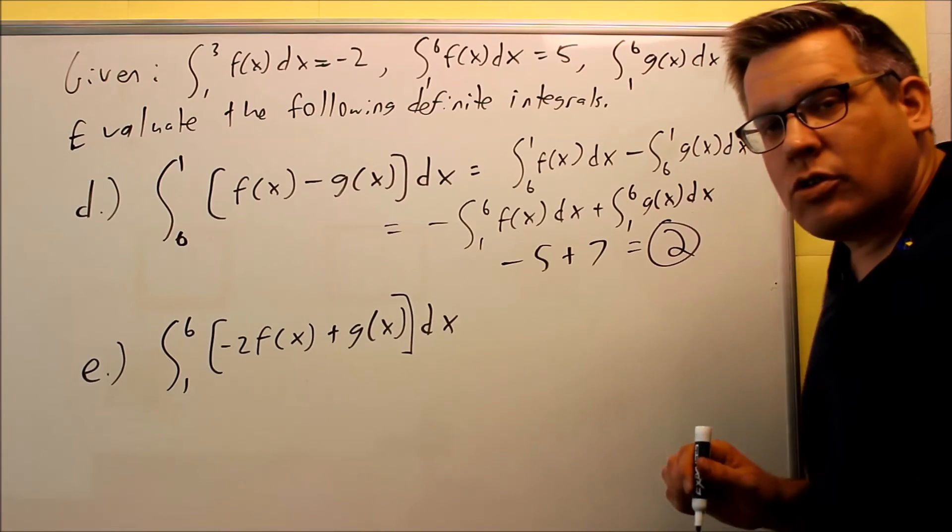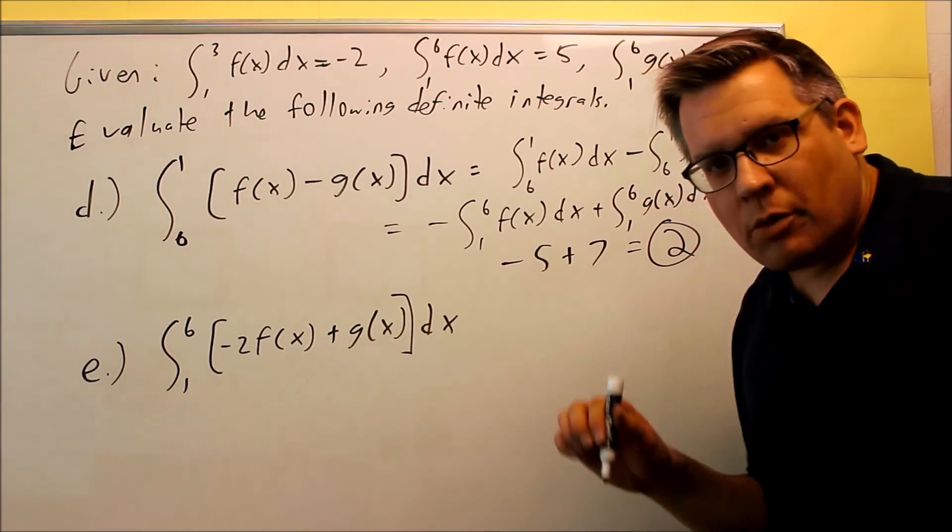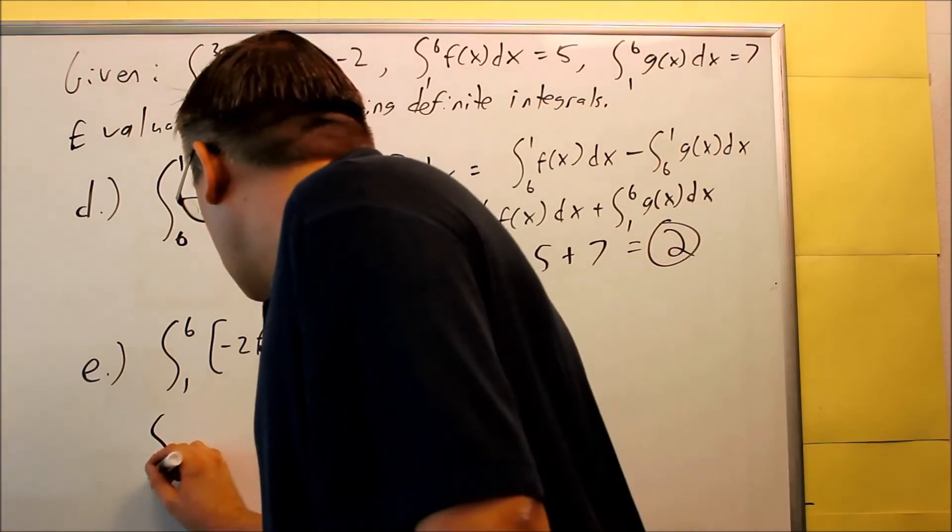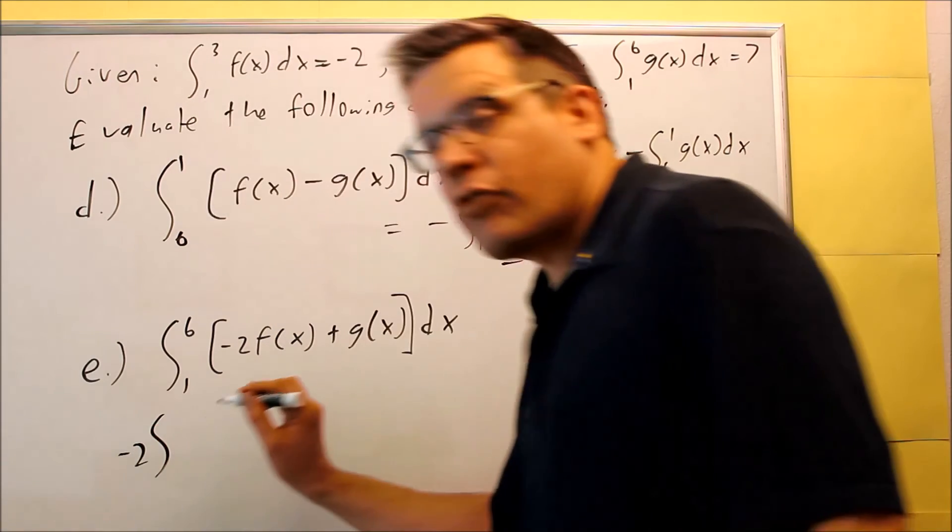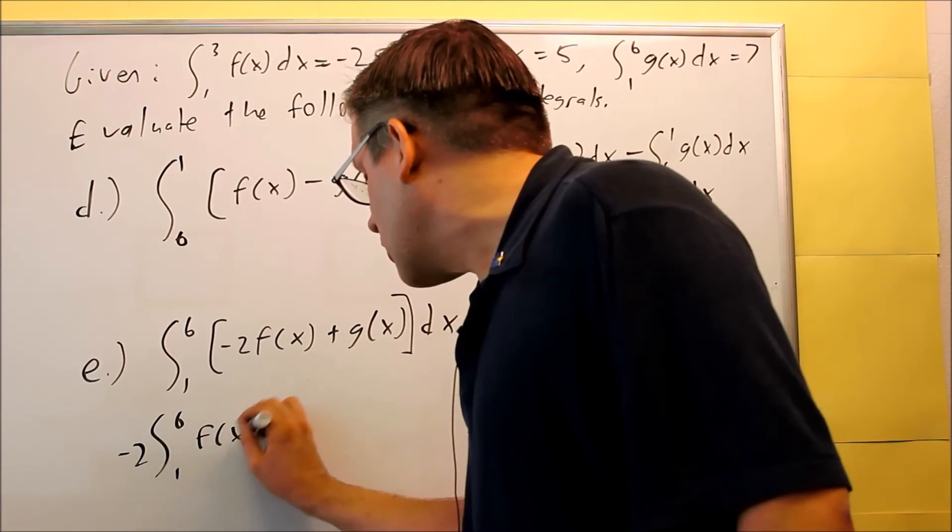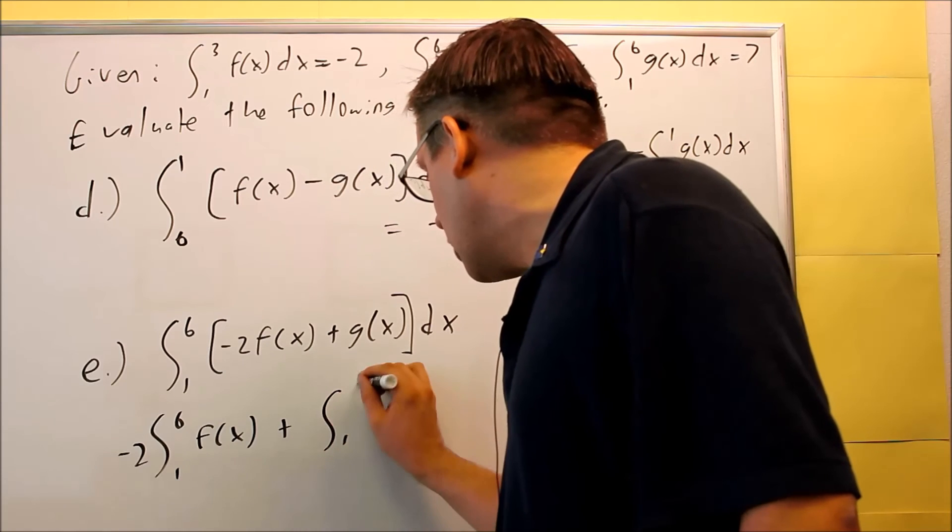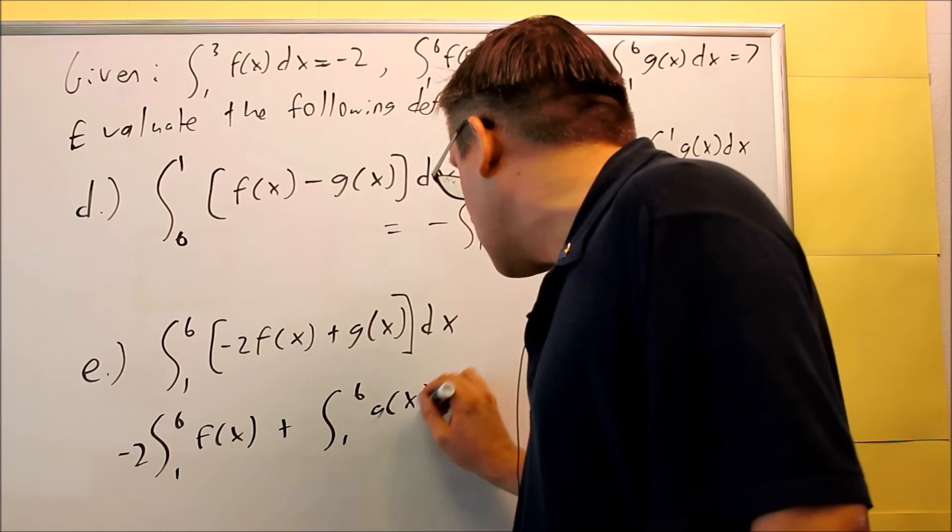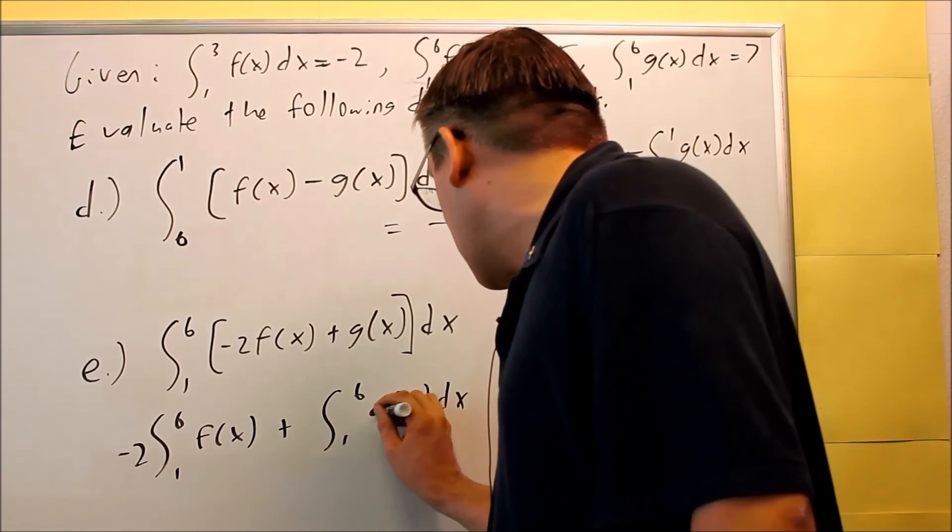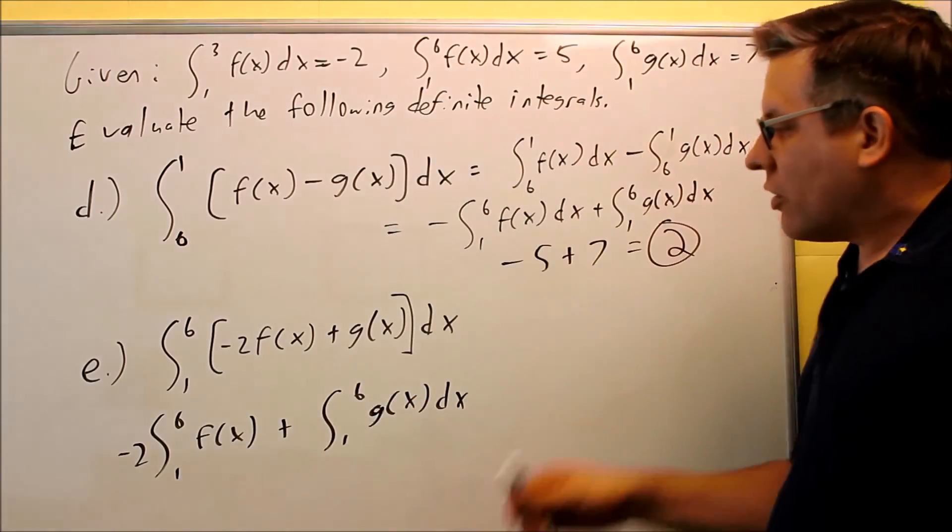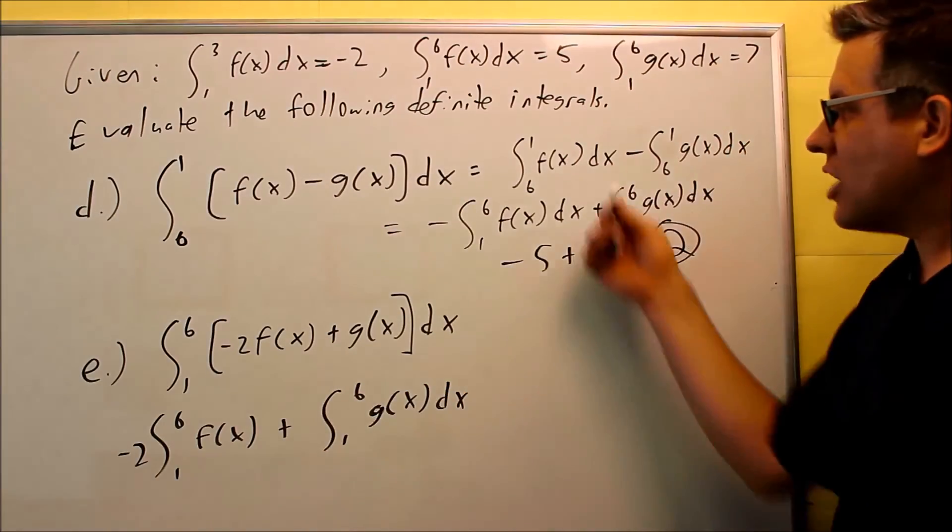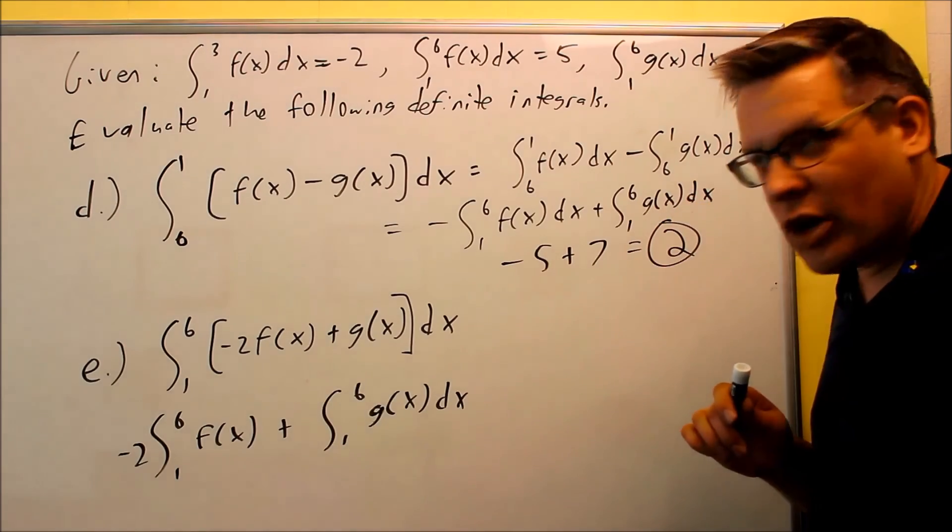Now this one, what I'm going to do is I'm going to have to split this one up also. This one I'm going to put negative two out front. I have one to six of f of x, then plus one to six g of x dx. I'm doing that so that way I can get these individually. Now this is one to six, I don't have to do the same thing I did for part d because the order is correct.